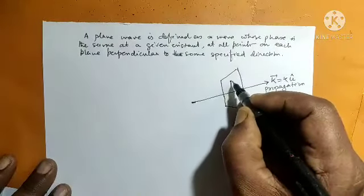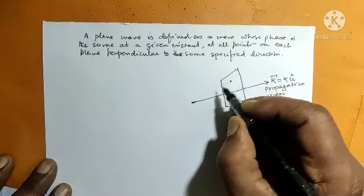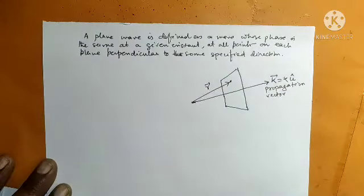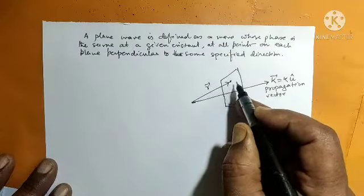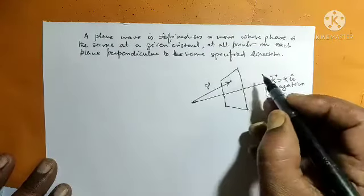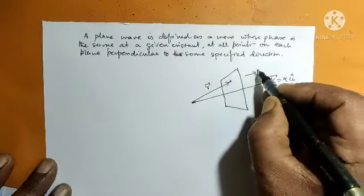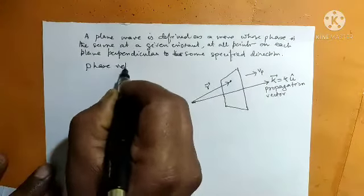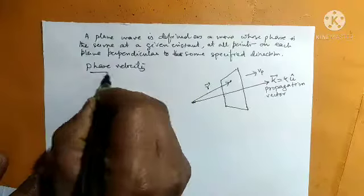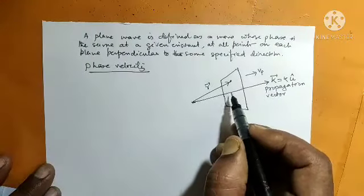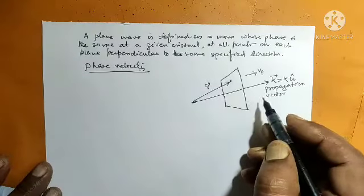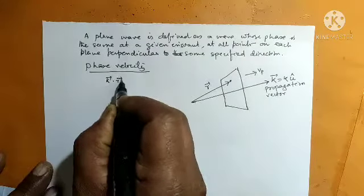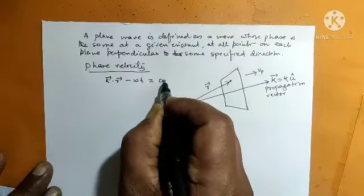We consider a point here where the electric field is E and magnetic field is B, and its position vector is R. The phase at each point on this plane is constant, and the wave is moving with velocity V_P, which is called the phase velocity. The phase velocity is the velocity of motion of the equiphase surface. A constant phase implies that K dot R minus omega T equals constant.